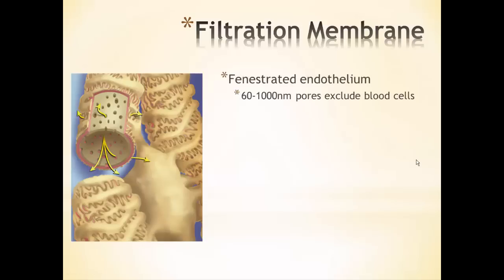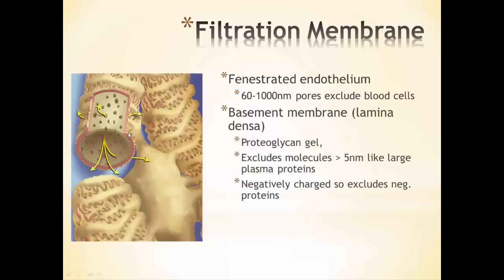The fenestrated endothelium is going to allow almost everything but blood cells to move through — those holes are big enough for plasma proteins, ions, water, hormones — everything except blood cells, which are too big to fit through those pores. Next is the basement membrane — sometimes called the lamina densa — a proteoglycan gel layer that excludes molecules greater than 5 nanometers, so large plasma proteins are stopped from going through. This also has a negative charge to it, which helps keep negatively charged proteins out of the filtrate, keeping them in the blood.